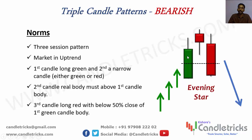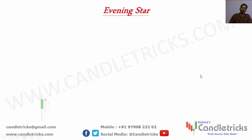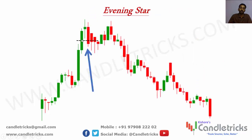Triple candle bearish pattern — evening star: after upward momentum, a long green candle, then a small-range second candle whose real body is above the first candle's body, then a third long red candle that must close below 50% of the first candle's real body. That is the evening star. Entry is below this level, and the price moves downward. Note: the third candle must close below 50% of the first candle — same rule applies inversely for morning star.